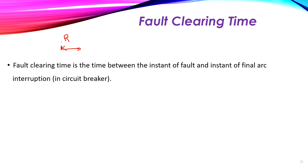After the relay time, we have another time for the circuit breaker when it trips or opens the circuit, including the arc interruption inside it. When a fault occurs, the current transformer steps down the current for the relay. When the current exceeds the pickup value, the relay sends a signal to the circuit breaker to operate.